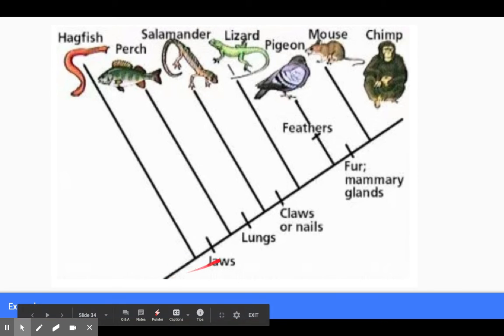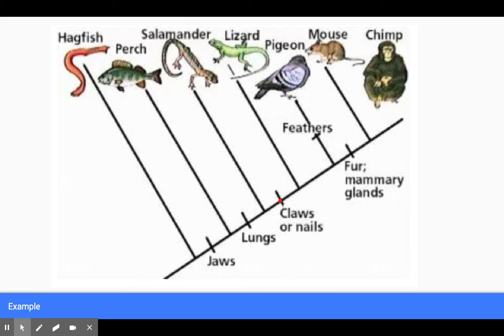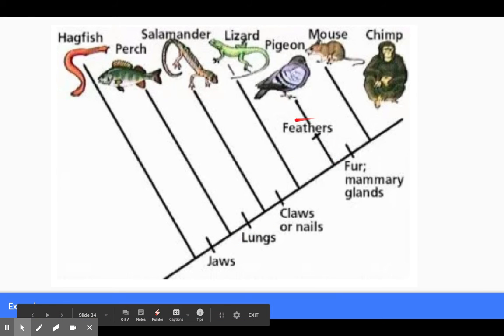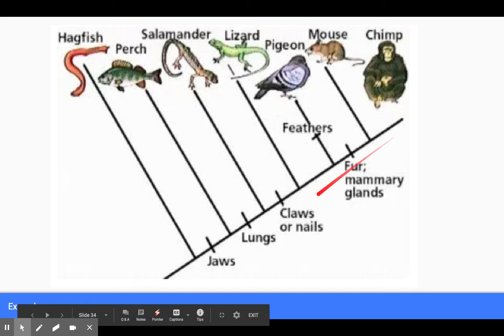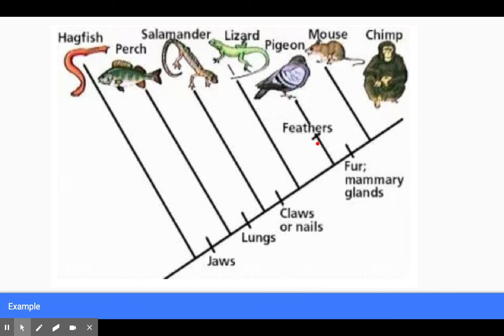If we wanted to go to salamanders, salamanders have jaws and lungs, but they don't have claws and nails, which is why they are right here. And so on and so forth. Like I said a little bit ago, we can have nodes on the actual branches, and that just kind of means that feathers didn't fit on our big branch down here. So we kind of made a little subcategory. So we go ahead and put that trait up here so that we know only pigeons have that trait.